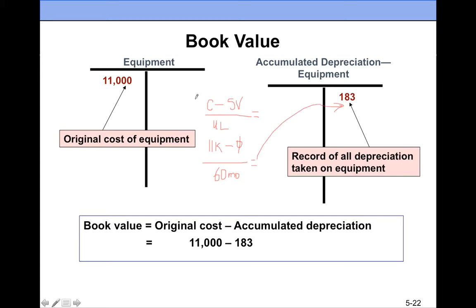So every month, the value of equipment loses $183 — it becomes an expense. We use up $183 out of the $11,000. This follows the matching principle in GAAP, because we will be using this equipment for 60 months. Every month I use it, this equipment earns me revenue, so I want to match the expense with the revenue I earn.